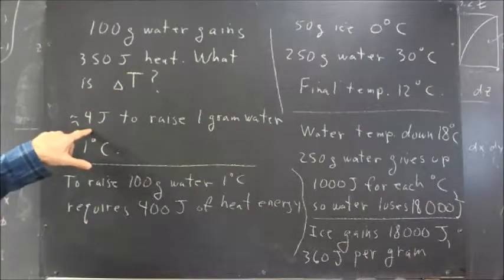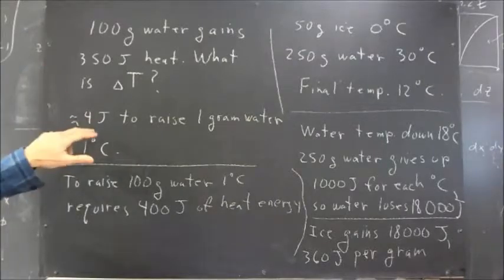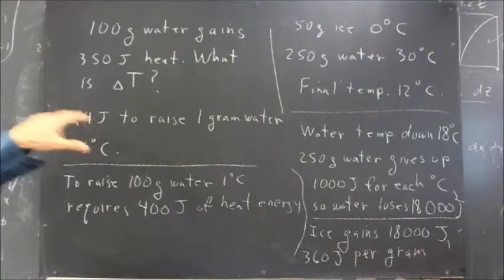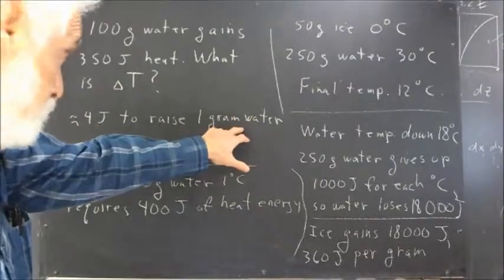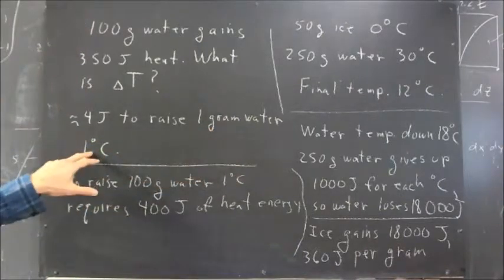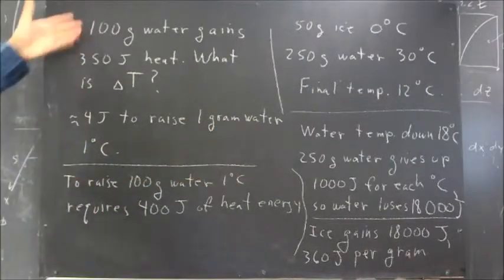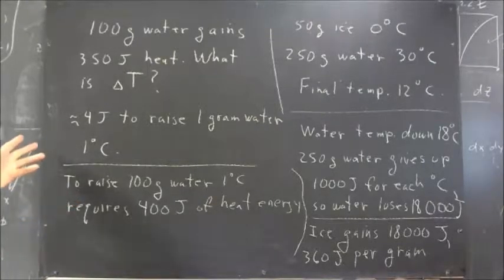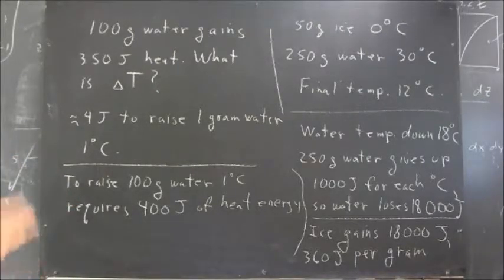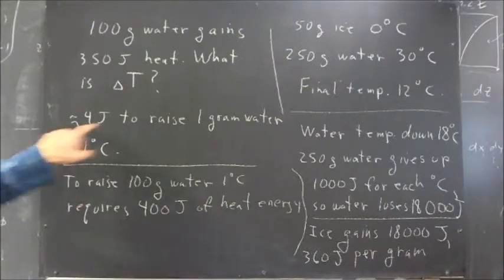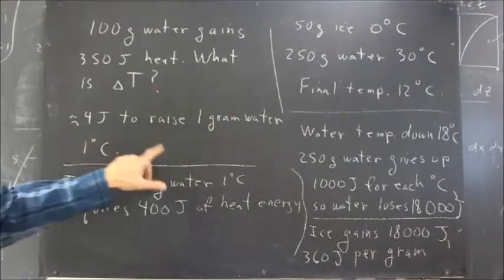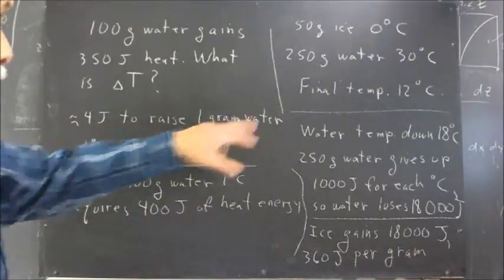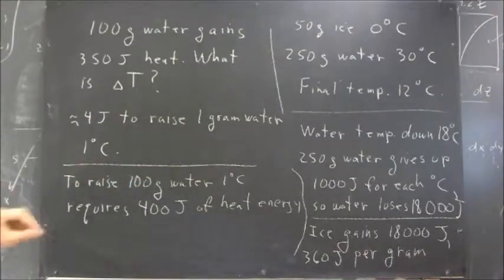Now, the information you're given in the stated problem is it takes about 4 joules to raise the temperature of 1 gram of water by 1 Celsius degree. So, figure this out. Well, we can do this with a formula, but we can do this by simply understanding what the words tell us, what the idea of 4 joules to raise 1 gram of water by 1 degree Celsius tells us.